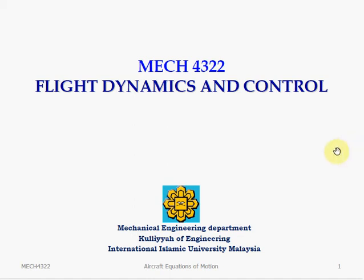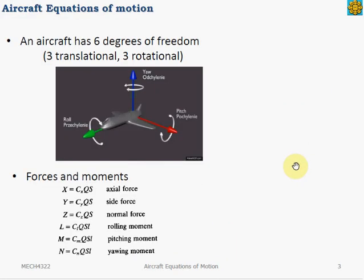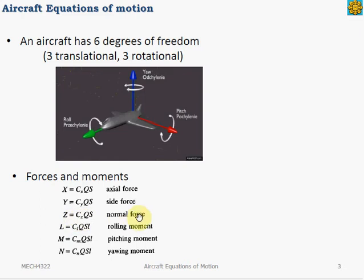This topic is about the derivation of the aircraft equation of motion. An aircraft has 6 degrees of freedom in motion: 3 in translational and 3 in rotational motion. The three forces acting on the aircraft are the axial force, side force, and normal force, denoted as X, Y, and Z respectively. The moments about the aircraft CG are the rolling moment, pitching moment, and yawing moment, denoted as L, M, and N respectively.